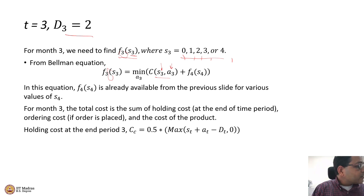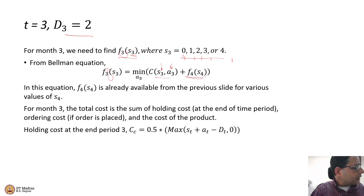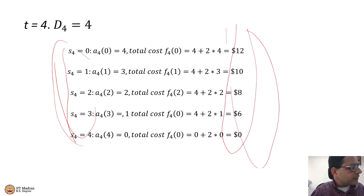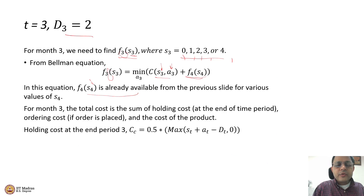But let us not stop there. We should also take action A3 in such a way that we minimize the cost of meeting the demand in time period 4 as well. We have already looked at what happens in time period 4 when the state variable is S4 — that data is already available. These are the potential values of the state, and therefore these are the potential costs depending on where we find ourselves in state 4. We also know the connection between A3 and S4.